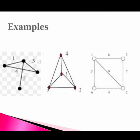Let us see some examples here. The first figure shows us the edge labeling of a graph. The second figure shows us the vertex labeling of a graph. And the third figure shows the total labeling of a graph where both the vertices as well as the edges are labeled.